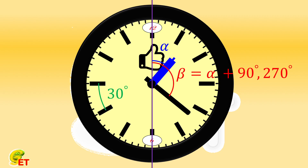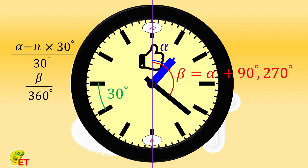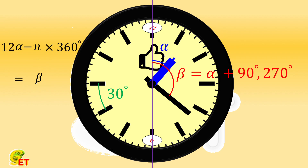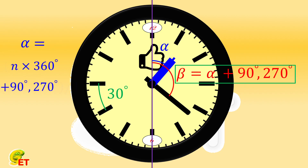The hour just passed is n o'clock, so the hour hand first rotates n times 30 degrees. If we use the hour hand to express the ratio of time within this hour over 1 hour, it is (alpha minus n times 30 degrees) divided by 30 degrees. If we use the minute hand, it is beta divided by 360 degrees. These two should be equal, giving us: 12 times alpha minus n times 360 degrees equals beta. Substituting the relationship between alpha and beta, we get alpha equals (n times 360 degrees plus 90 or 270 degrees) divided by 11.